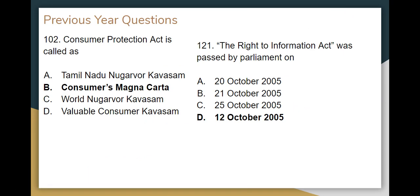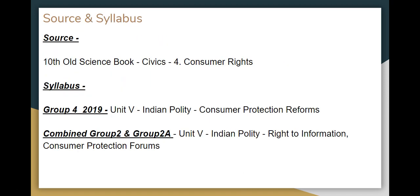The Consumer Protection Act is called the Consumer's Magna Carta. The Right to Information Act was passed by parliament on 12 October 2005. The source is the 10th standard old Social Science book — Civics — Consumer Rights.